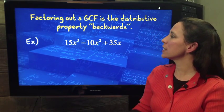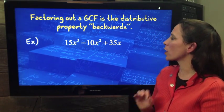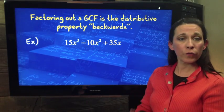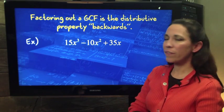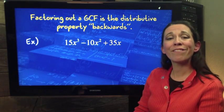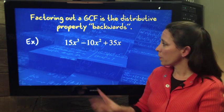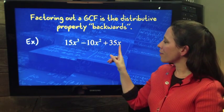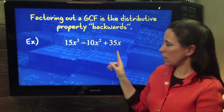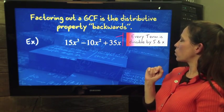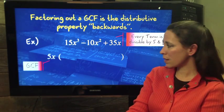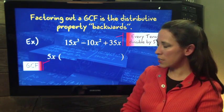So here we have 15X cubed minus 10X squared plus 35X. First, we need to find our greatest common factor. 15, 10, and 35. They're all divisible by 5, nothing larger. Also, all of them have an X. The last one has a single X, so that's going to be part of our GCF. Every term is divisible by 5 and X, so 5X is our GCF.